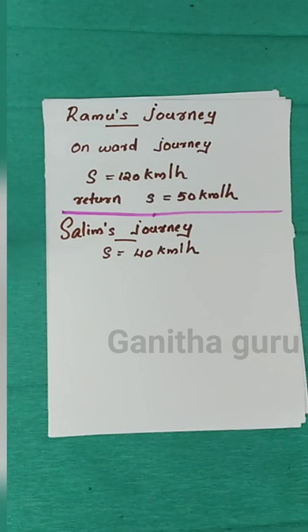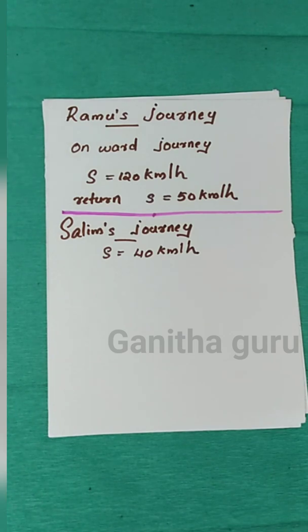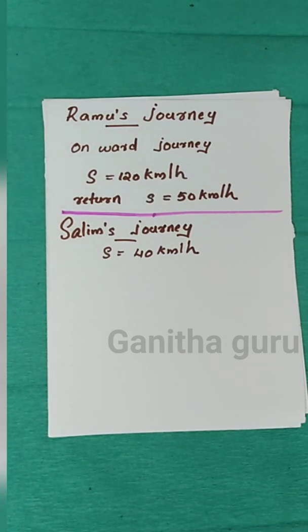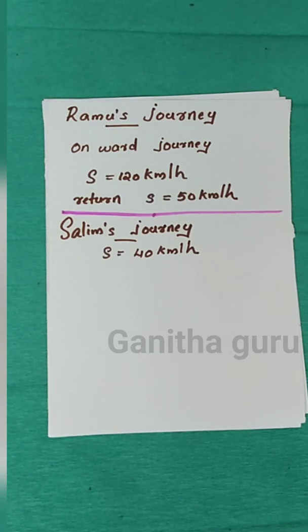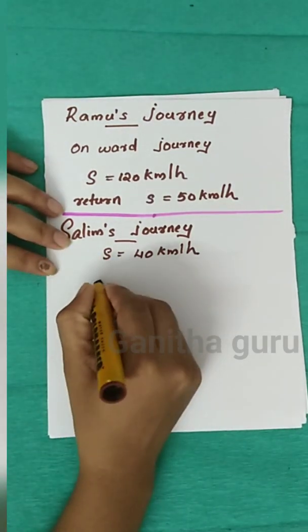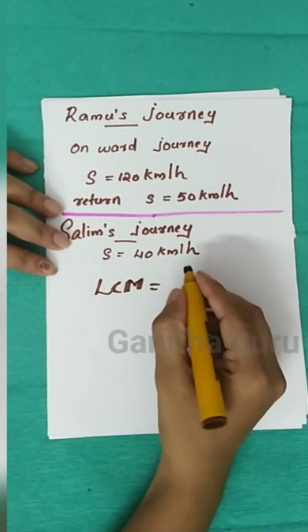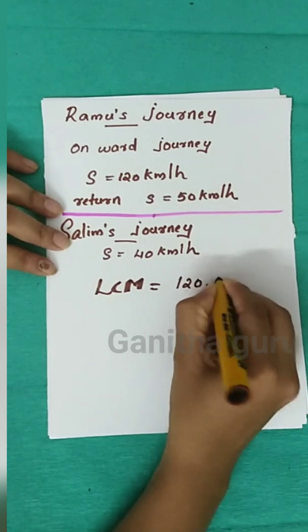We have to assume a distance. The three speeds given are 120, 50, and 60 km per hour. We need an exactly divisible number. The method is LCM. LCM of 120, 50, and 60 is 600. So assume the one-way distance is 600 km.